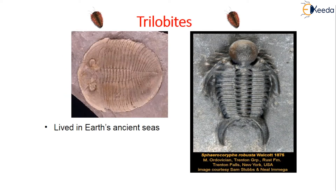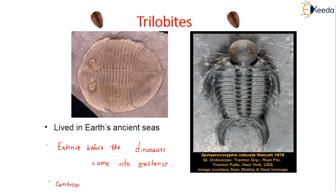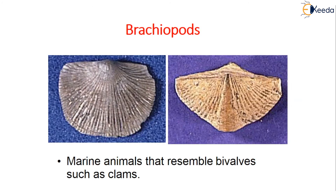Trilobites lived in earth's ancient seas and went extinct before the dinosaurs came into existence, making them older than dinosaurs. This is why the Cambrian period is also known as the age of trilobites. Brachiopods are marine animals that resemble bivalves such as clams.